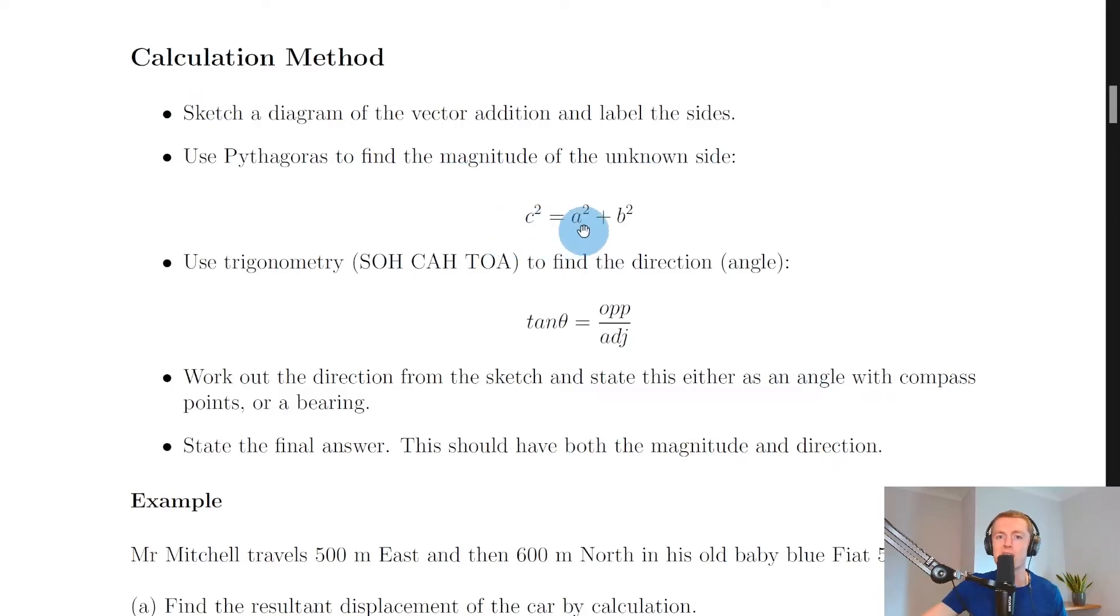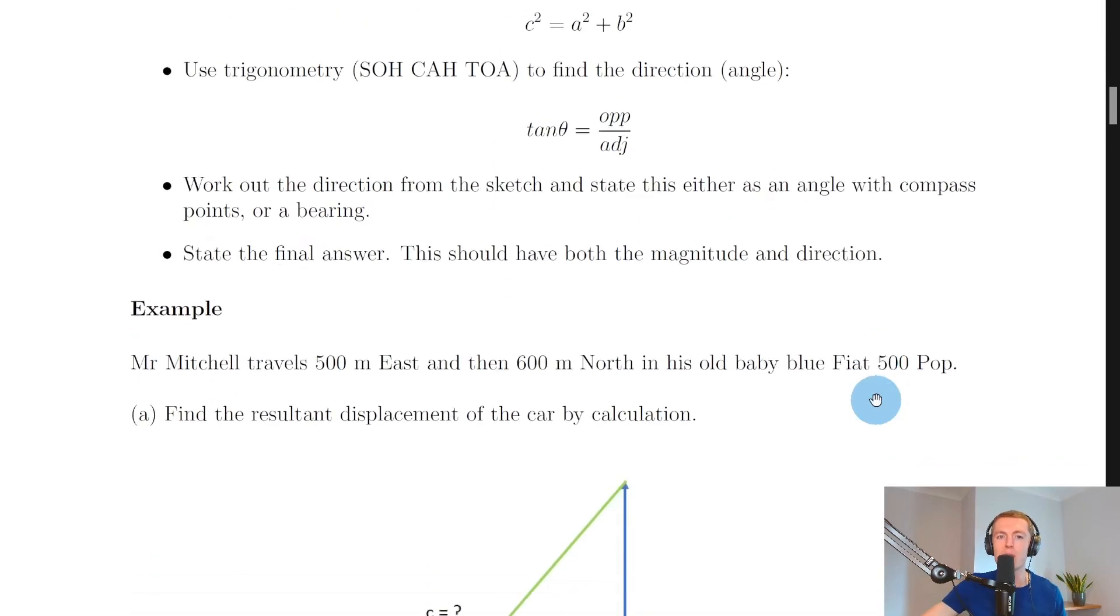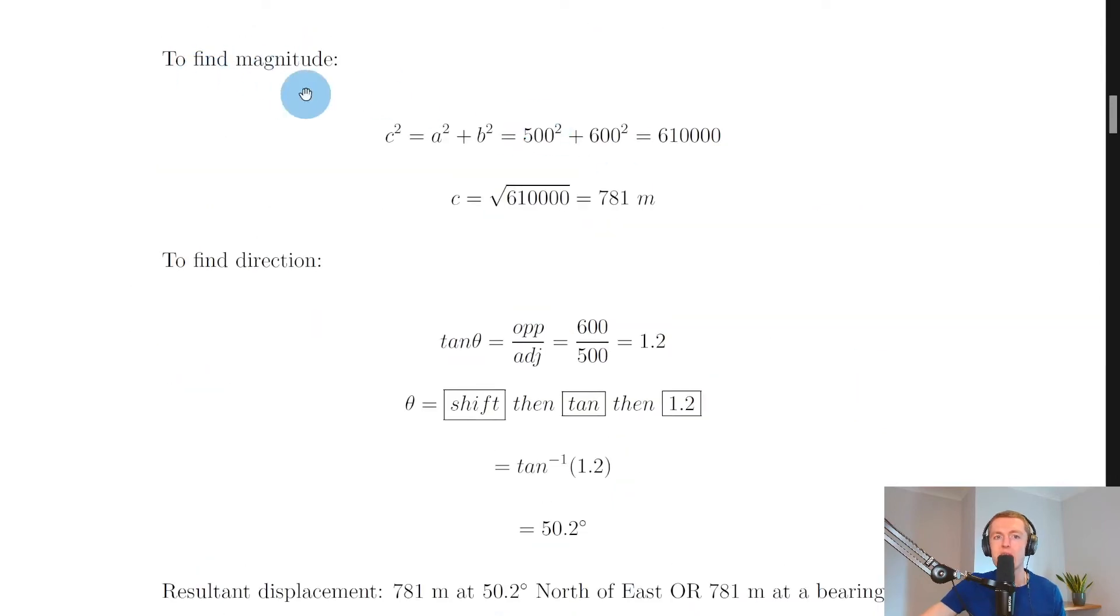It then says use Pythagoras to find the magnitude of the unknown side. So we can use c² = a² + b² to find the magnitude of the side c that we've labeled. So it shows that here. So it says to find magnitude we can do c² = a² + b², so that's the same as 500² + 600², which gives us 610,000. And if you then square root that in your calculator, we can find the size of c, which is 781 meters.